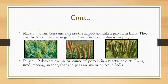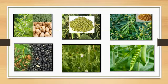Millets: jowar, bajra, and ragi are the important millets grown in India. They are also known as coarse grains because they have a rough outer covering, and their nutritional value is very high. Pulses: pulses are the major source of protein in a vegetarian diet. Gram, urad, moong, masur, arhar, and peas are some major pulses grown in India.